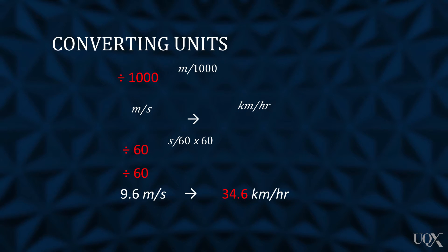We now check that our units are correct. Our runner is traveling 34.6 kilometers per hour — luckily, less than the local speed limit.